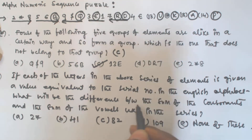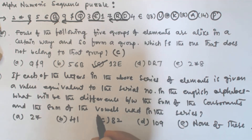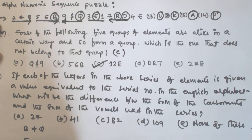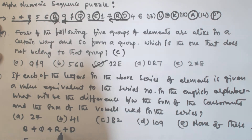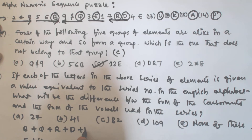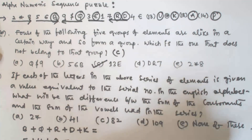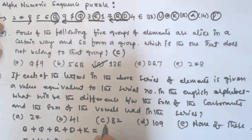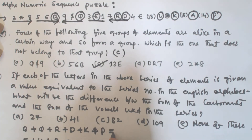We have to find the difference between the sum of the consonants and the sum of the vowels. Taking the consonants: B is a consonant, Q is a consonant, E is a vowel, R is a consonant, D is a consonant, U is a vowel, K is a consonant, A is a vowel, P is a consonant. These are the consonants and these are the vowels. Now we have to find the sum of all of them — B, Q, R, D, K, P for consonants, and I missed P so P will come here.